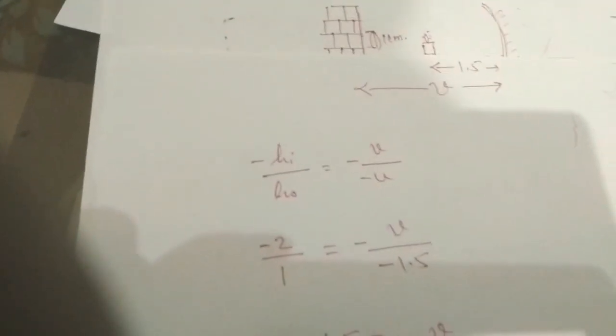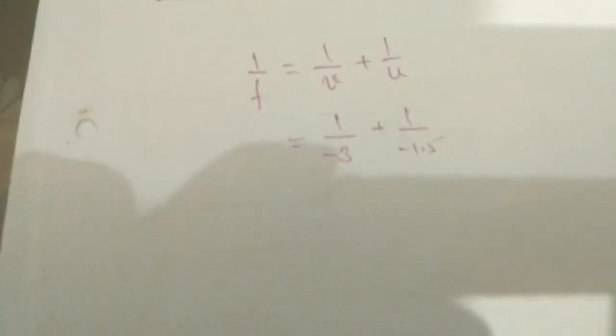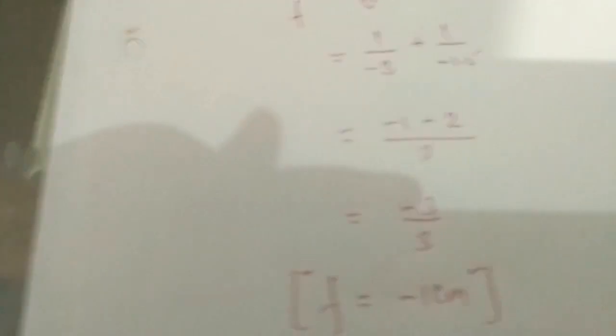The negative sign always indicates only the direction of the object or image. For the focal length, we use this equation and on filling the values, the focal length comes to 1 cm.